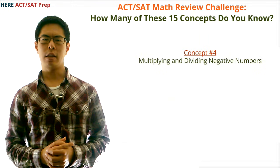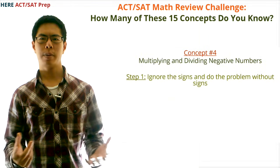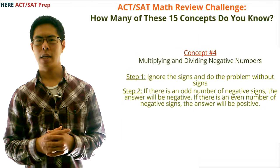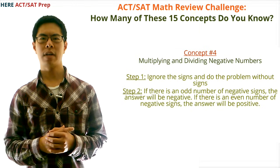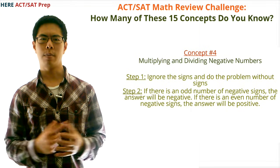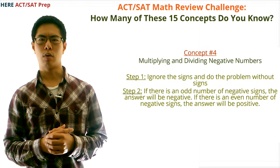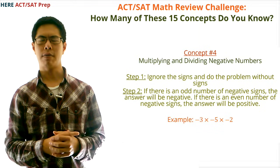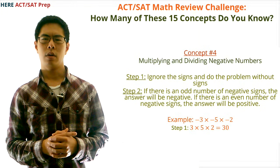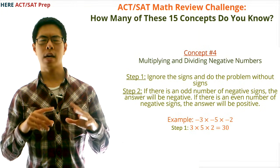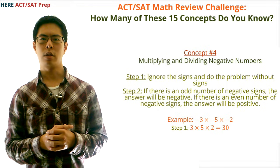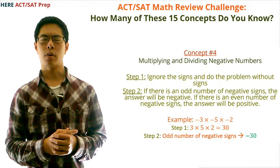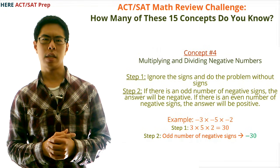Concept number four: multiplying and dividing with negative numbers. There are two steps. First, ignore the signs and do the problem without signs. Second, if there is an odd number of negative signs the answer will be negative; if there is an even number or zero negative signs the answer will be positive. For example, (−3) × (−5) × (−2): ignoring signs gives 3 × 5 × 2 = 30. There are three negative signs, which is odd, so the final answer is negative 30.